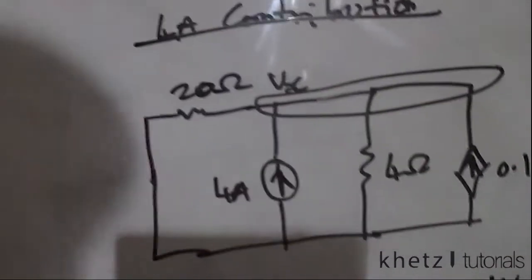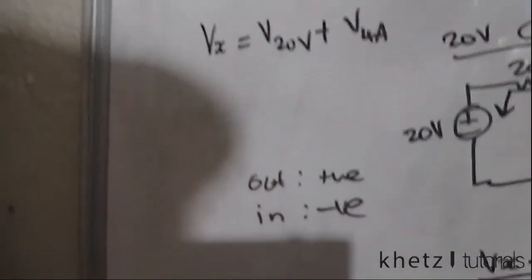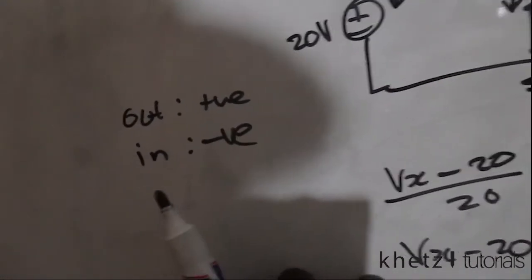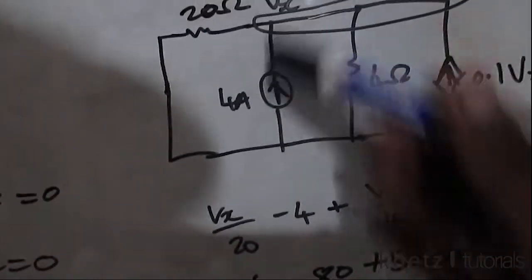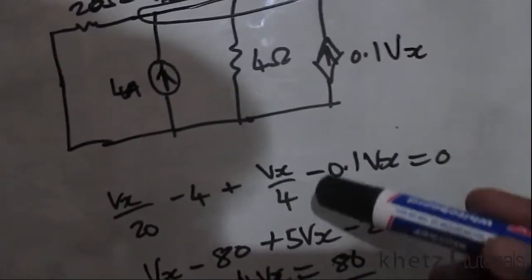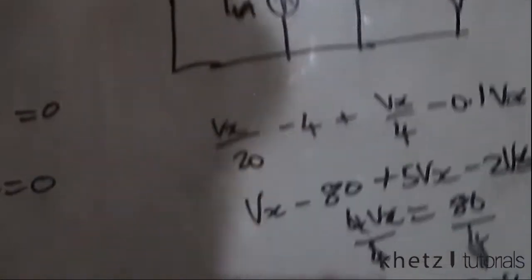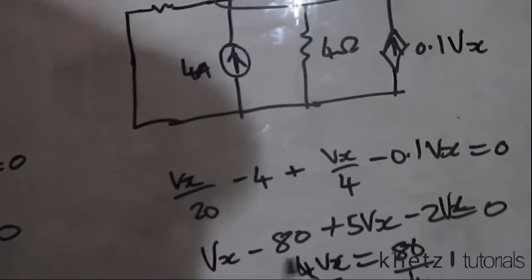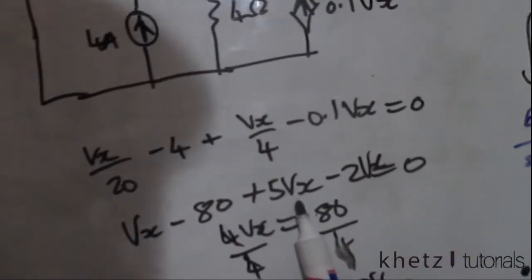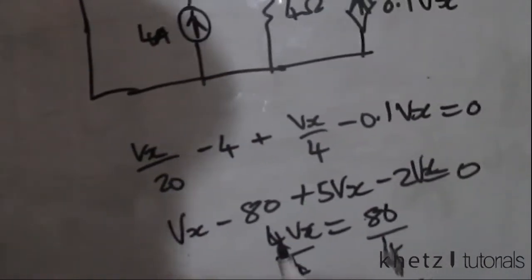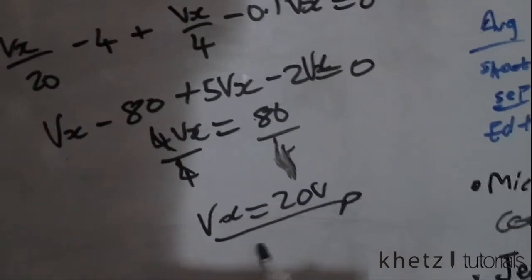Moving on to the 4-ampere contribution, we also use nodal analysis with the same sign convention — currents out are positive, currents in are negative. Going out: Vx/20 and Vx/4. Going in: −4 (the 4A source) and −0.1Vx (dependent source). Multiplying through by 20: Vx − 80 + 5Vx − 2Vx = 0, giving 4Vx = 80. Dividing by 4, Vx = 20 volts.